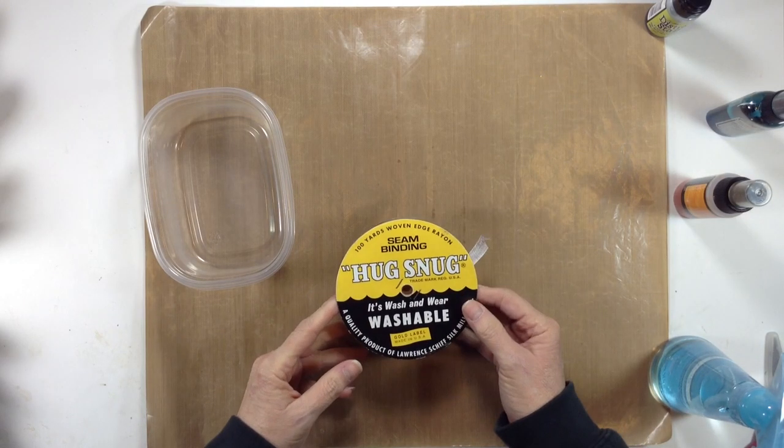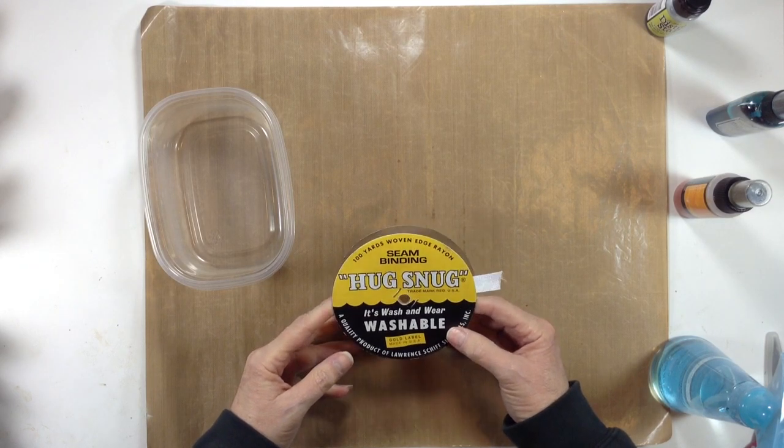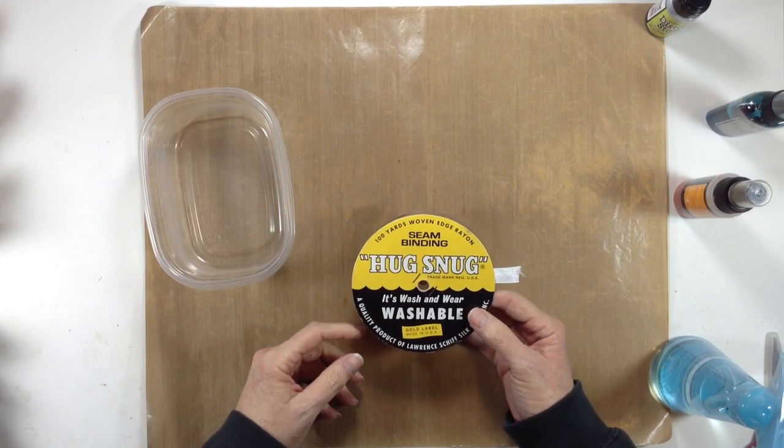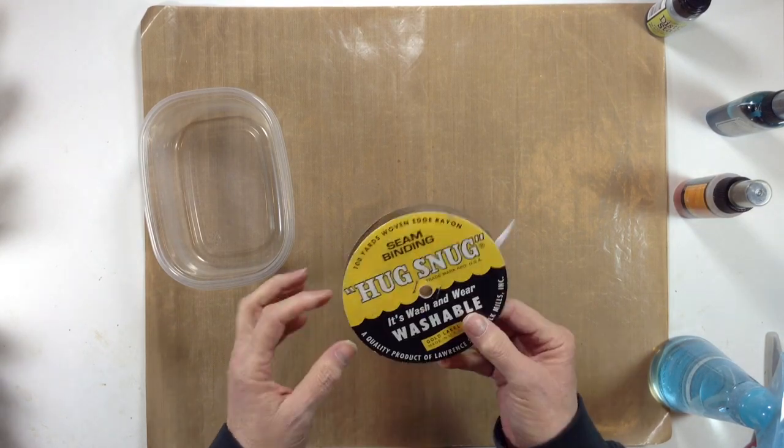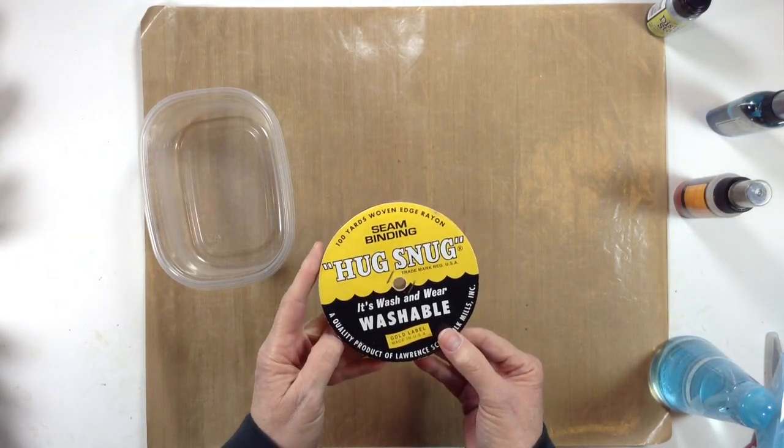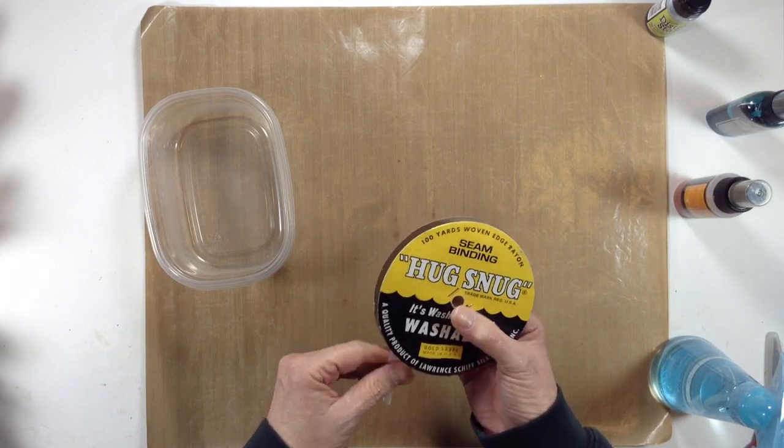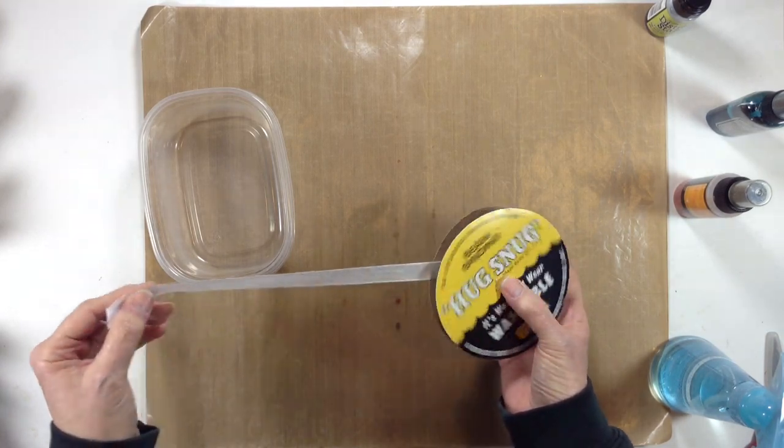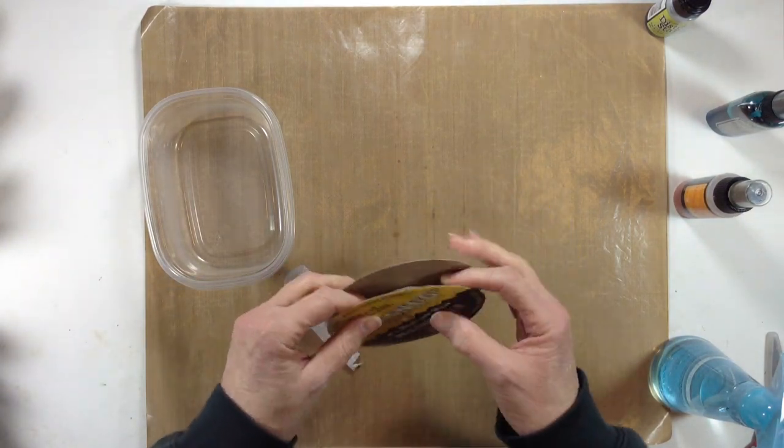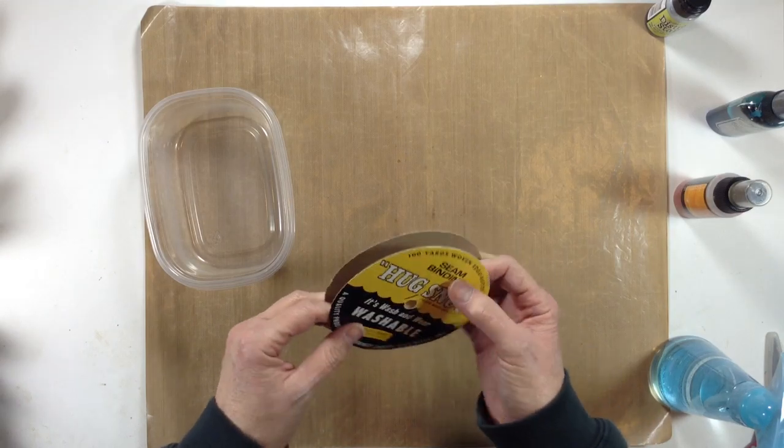The seam binding I use is from Hugsnug and I get it online from sewtrue.com, which is a sewing company that has all different kinds of sewing supplies. I like to buy the white so I can color my own, and it comes 100 yards on one roll. It's nine dollars and seventy-five cents plus shipping, but if you sign up on their newsletter they offer free shipping a few times without a minimum order.